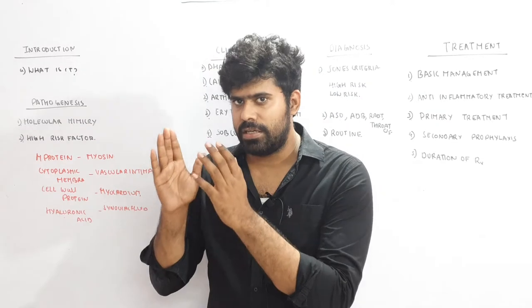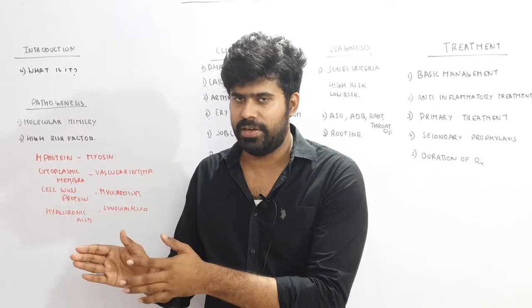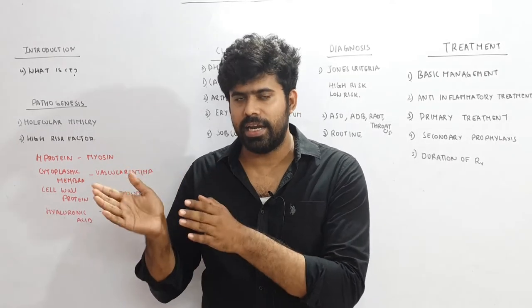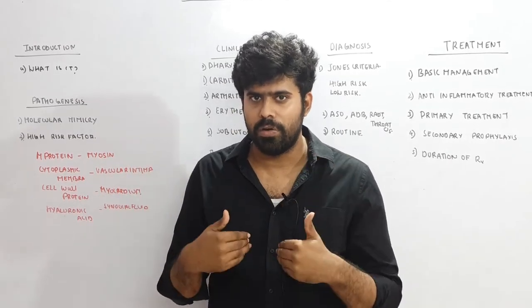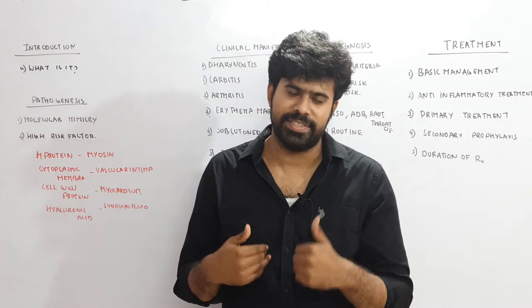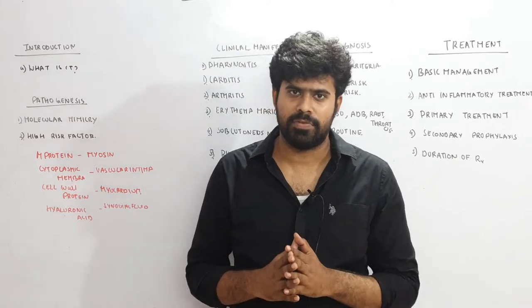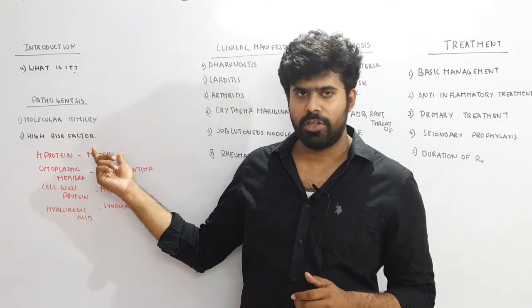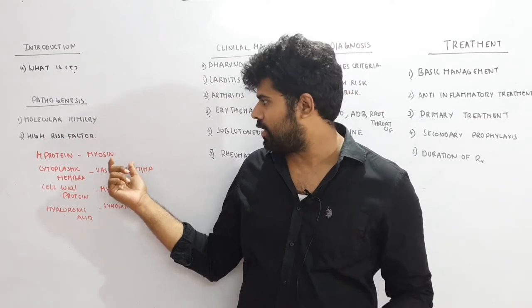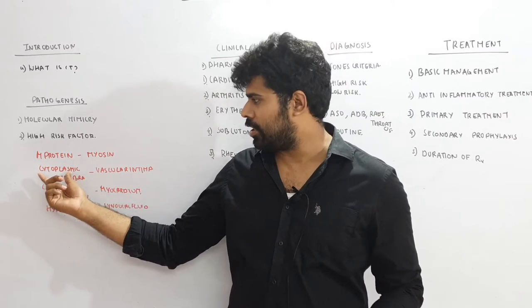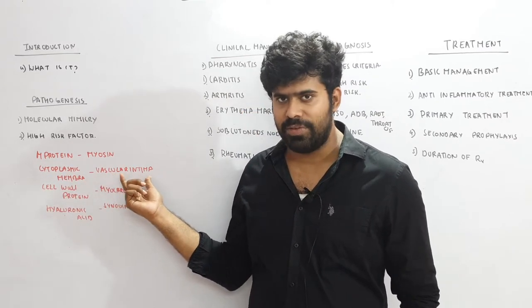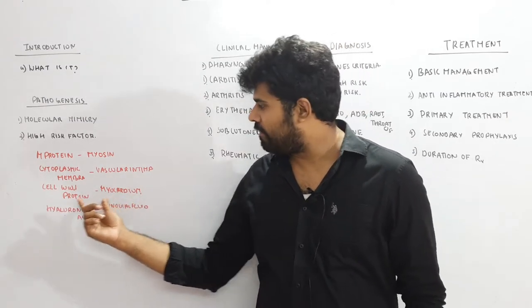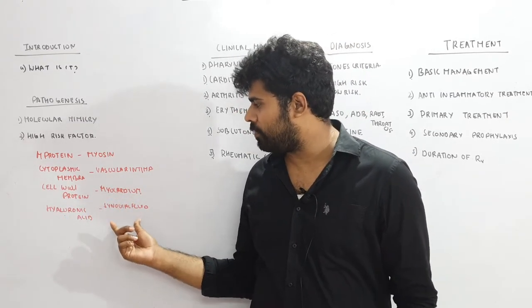There are some antigens of the group A Streptococcal pharyngitis that can cross react with human antibodies. The antibodies formed against that antigen can cross react with our own human antigens. The cross-reacting compounds include: the M protein, which can cross react with human myosin and tropomyosin of the heart; the Streptococcal cytoplasmic membrane, which can cross react with the vascular intima; the cell wall protein, which can cross react with the myocardial muscle; and hyaluronic acid, which can cross react with the synovial fluid.